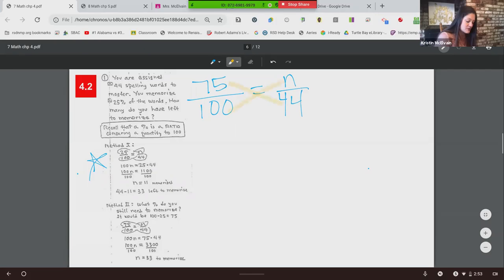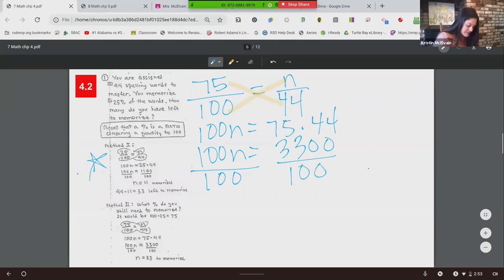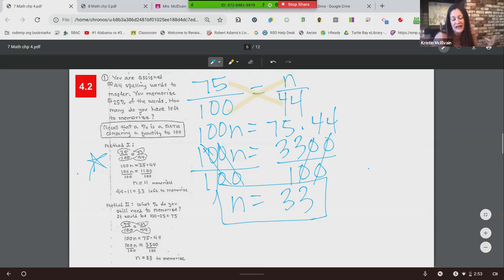Alright. So we are going to say, I know 25%. So I need to memorize 75% of my words. So how many is that out of 44 total? So we're going to do our cross multiply. 100N equals 75 times 44. And that is 3,300. Good thing that's not all the words, right. And divide each side by 100. So we can get N by itself. Those cancels, that cancels out. This cancels out. And that leaves us with 33 left to memorize. So just much quicker and easier, I think. But we learned the other way, just so you understand what we're doing. And I know you guys all do. So that's what we're looking at.